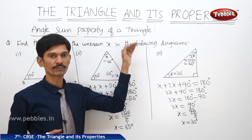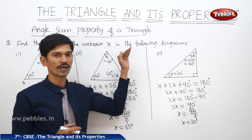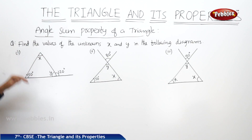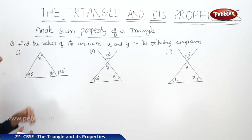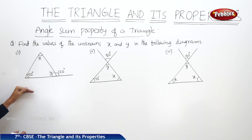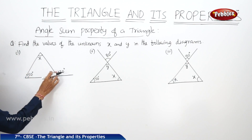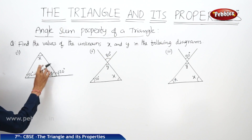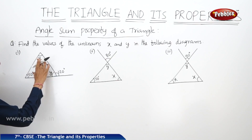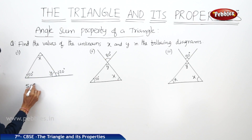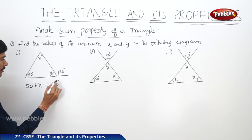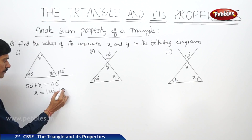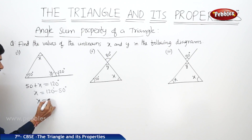Using the angle sum property of a triangle, we can find the value of any unknown angle in a triangle. Now let us solve the second question using the angle sum property. Find the values of the unknowns X and Y in the following diagrams. In the first figure, one angle is represented by 50 degrees and the exterior angle is represented by 120 degrees. According to the exterior angle property of a triangle, the exterior angle equals the sum of the interior opposite angles, so 50 plus X equals 120 degrees. Therefore X equals 120 minus 50, which is 70 degrees.